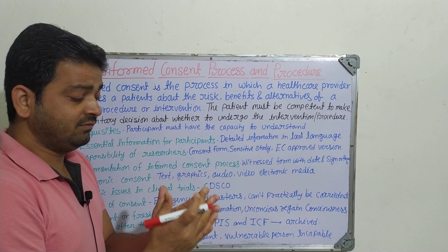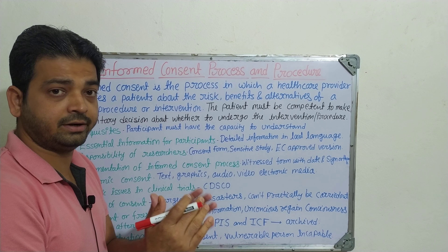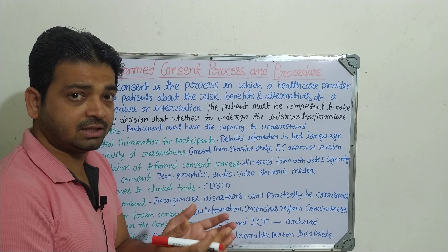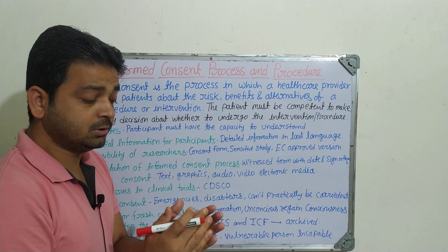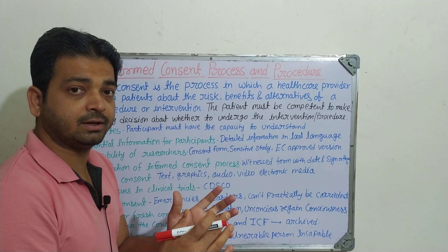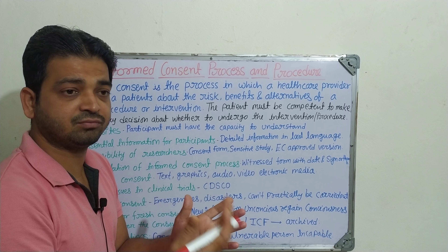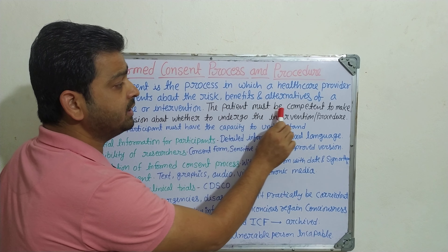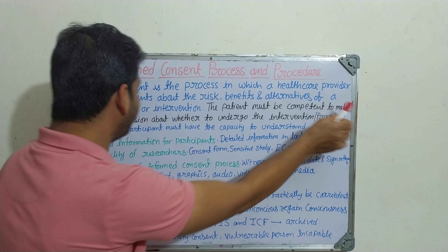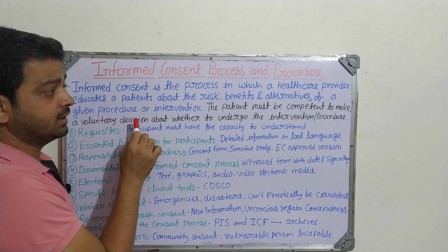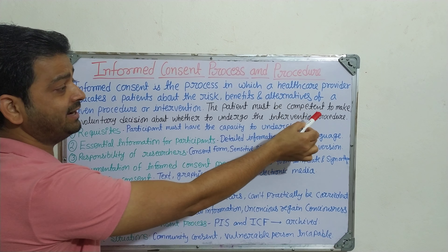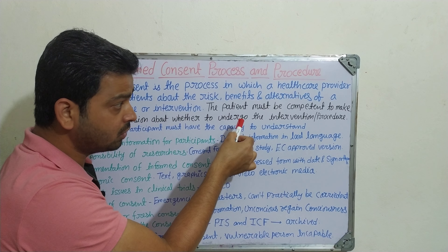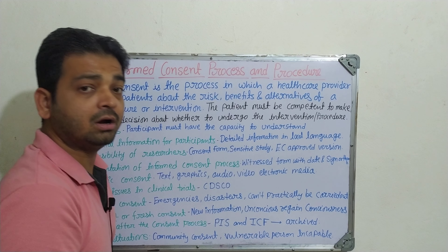So in phase one, for example, under 100 they are going to take the healthy human volunteers. Those healthy human volunteers they will get from the society, from the community only. So they're going to tell that this new chemical entity is for diabetes or for cancer and they are going to use it on those people. The patient must be competent to make a voluntary decision about whether to undergo the intervention, research, or procedure or not.